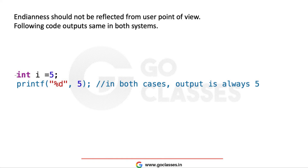This endianness should not be visible from the user's point of view. Suppose the user has a variable 'i' which is 5. If you print 'i', it will just be 5 — it will not differ based on endianness. So from the user's point of view, it should not matter which endianness the system is using.